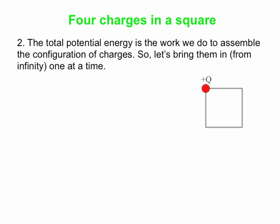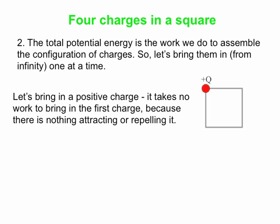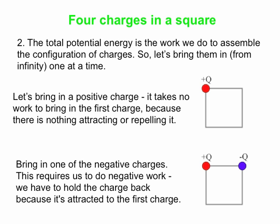We bring the charges in one at a time. The first charge takes no work — there's nothing else to attract or repel it, so we start it at rest at infinity and place it at rest at the corner, doing no work. For the second charge — say, a negative Q at the top right — it's attracted to the positive, so it wants to fly in. We have to hold it back; the force we apply is opposite to the displacement, so we do negative work bringing it in.